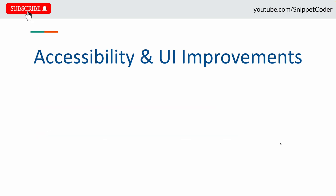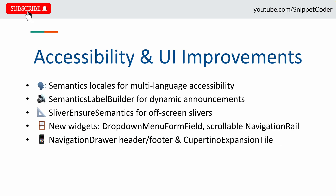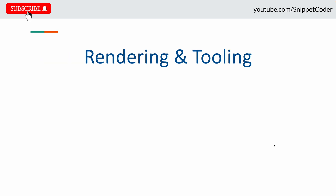Next, accessibility and UI improvements. Flutter now supports semantic locales for multi-language apps and a new SemanticsLevelBuilder for dynamic announcements. There is also support for off-screen slivers with sliver semantics. On the UI side, we get new widgets like DropdownMenuFormField, a resizable NavigationRail, and updates to NavigationDrawer with header and footer. iOS also gets a brand new CupertinoExpansionTile widget.